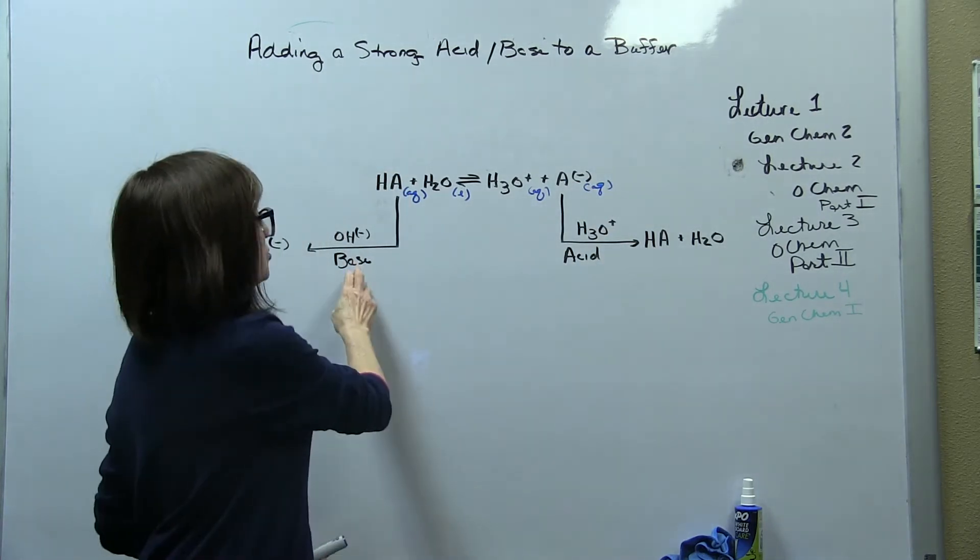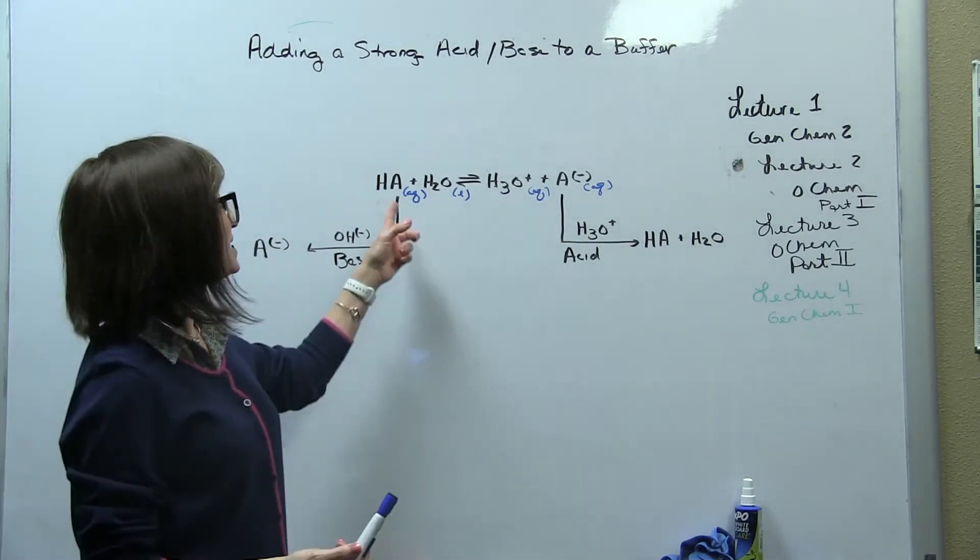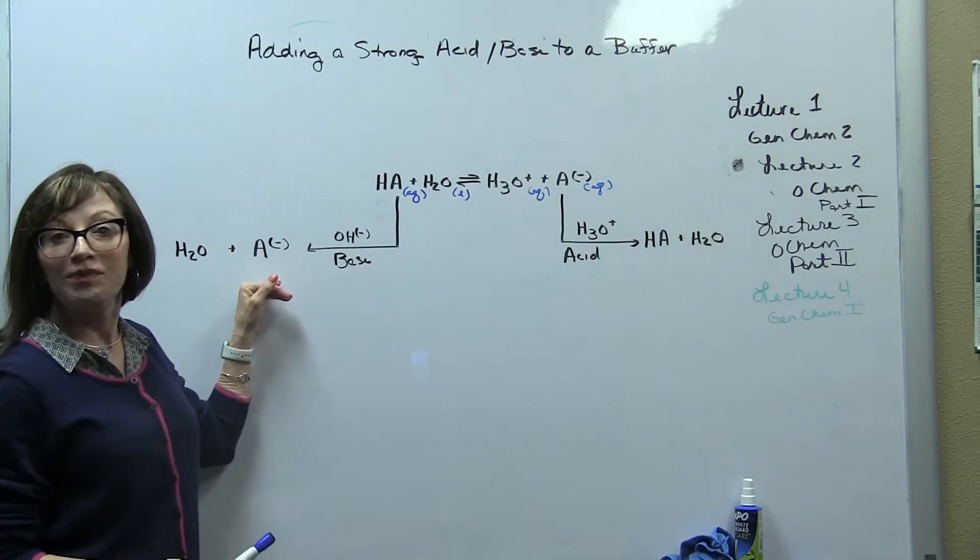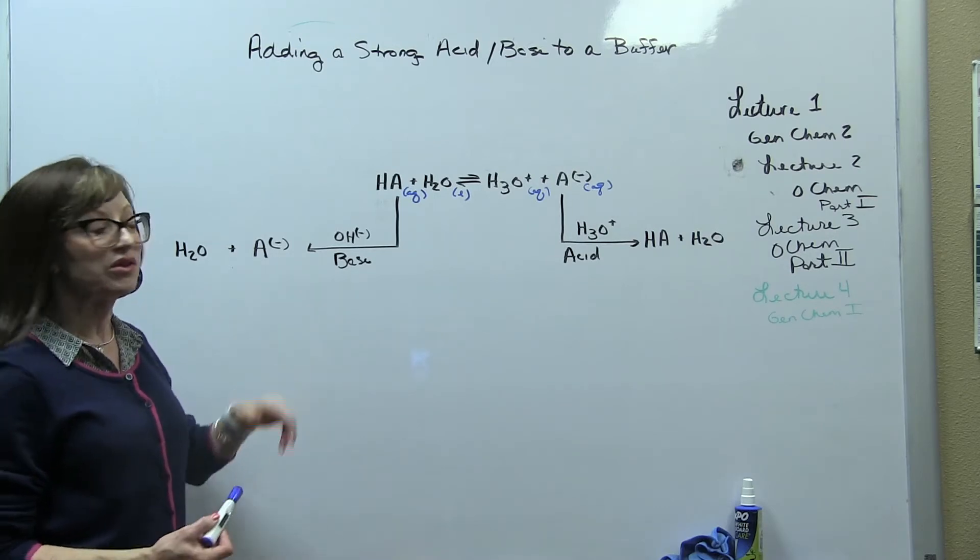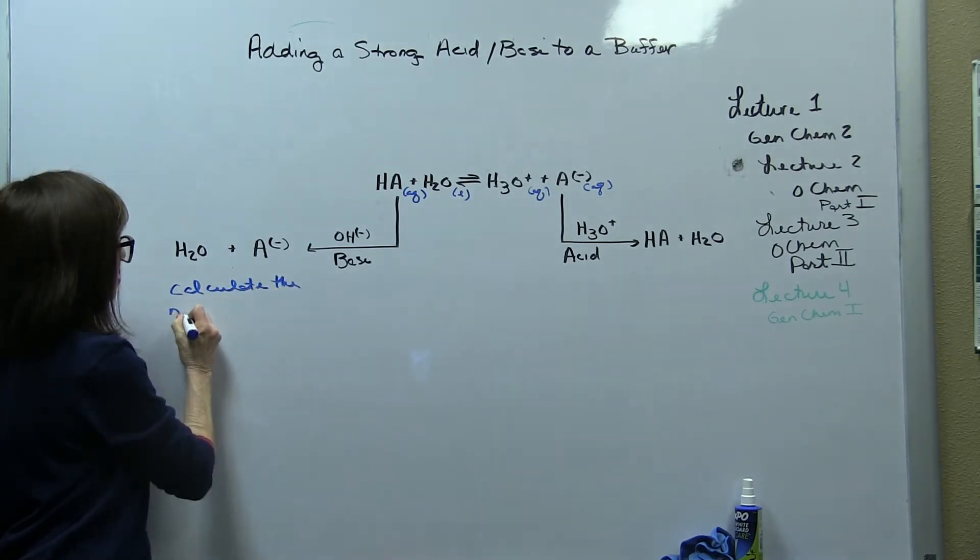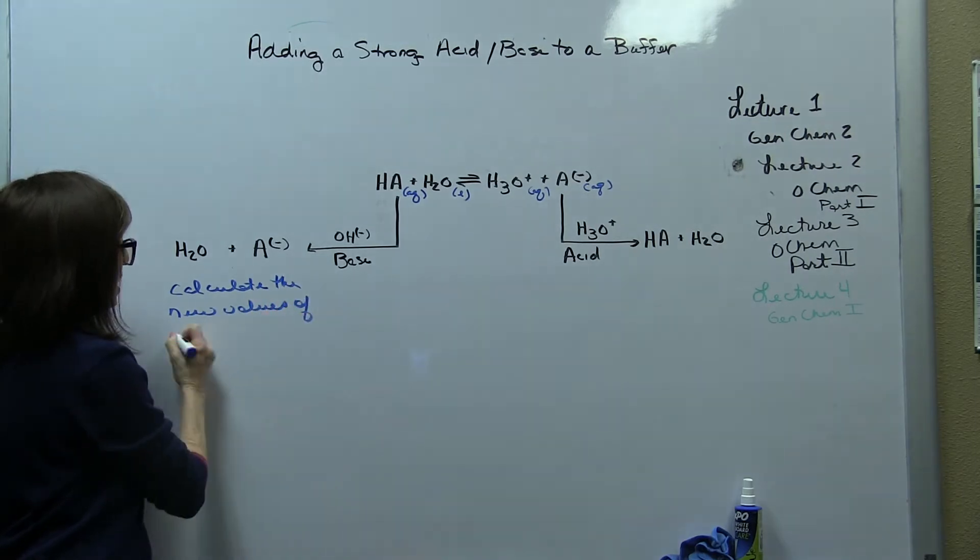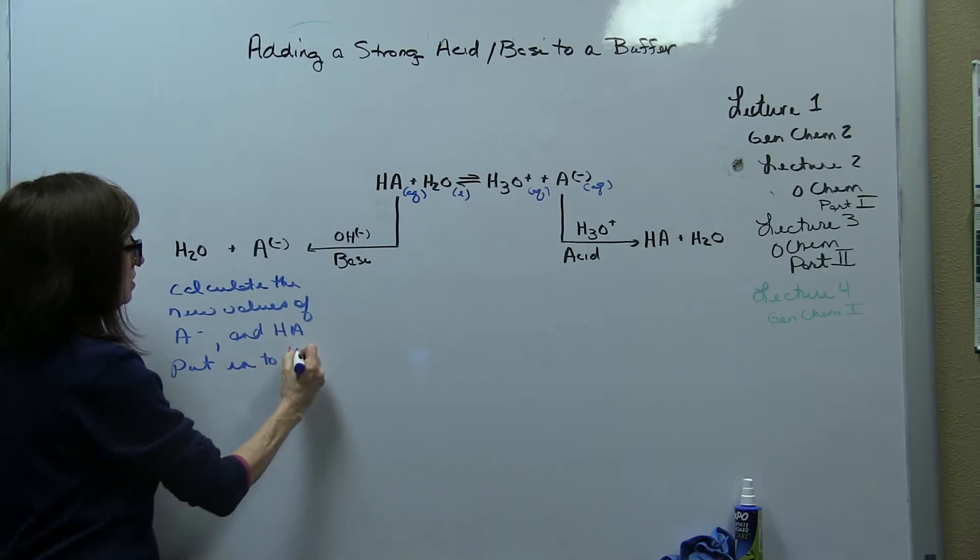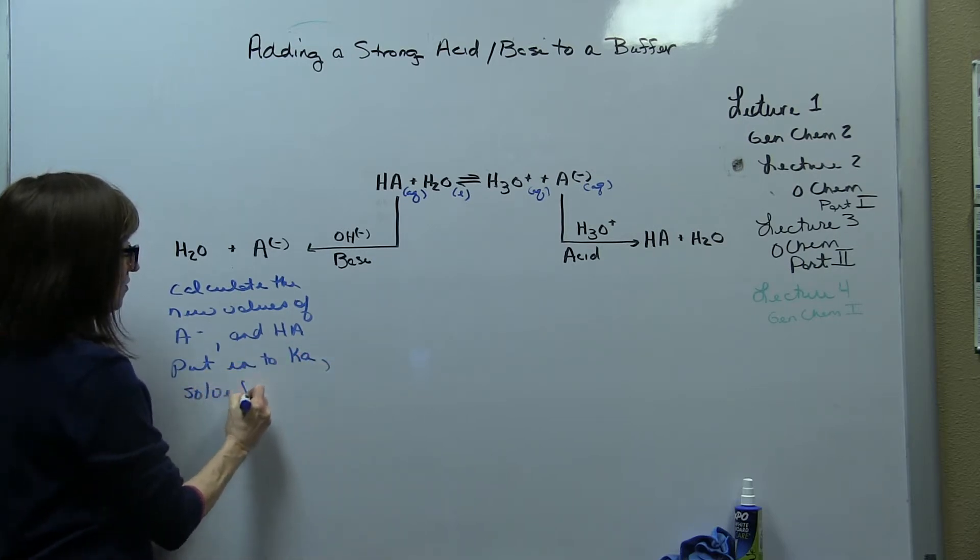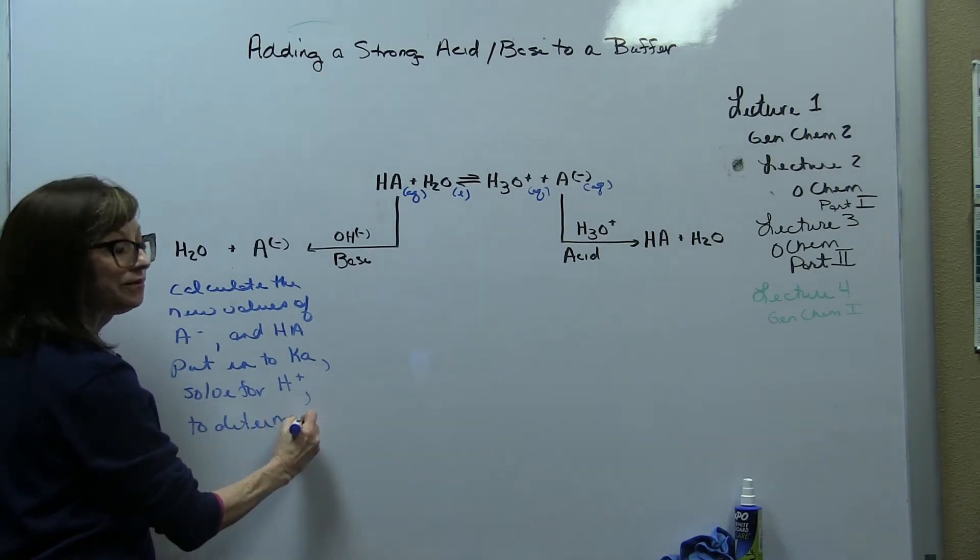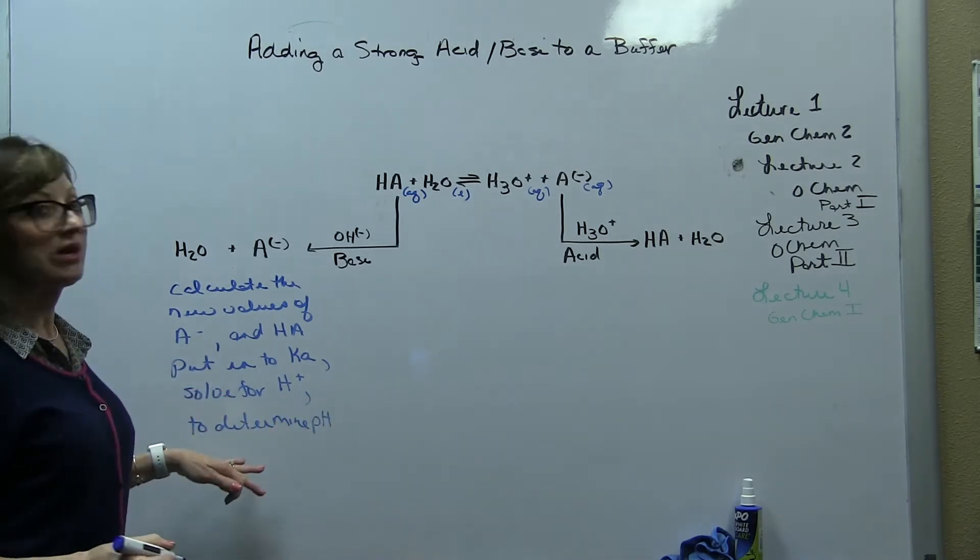So when we add strong base, the strong base is going to react with the acid component in the equilibrium, which is HA, and it's going to produce the conjugate base, A minus. So what we have to do after that point is we have to calculate the new values of A minus and HA, put it into the equilibrium expression and solve for H plus to determine pH. That's pretty straightforward and simple.